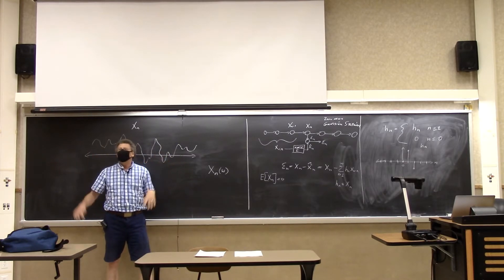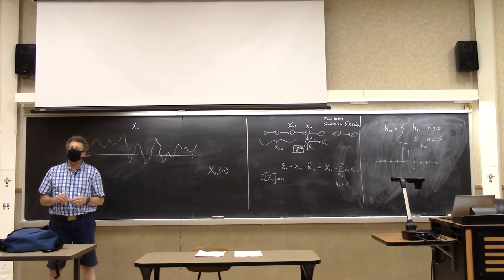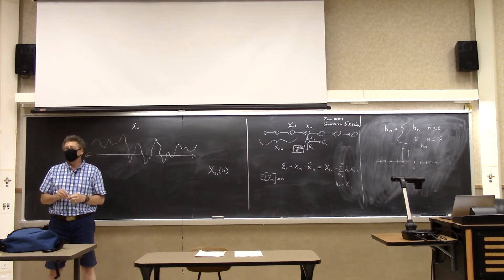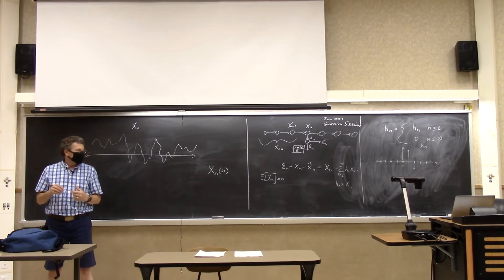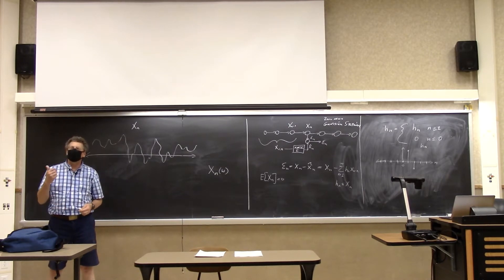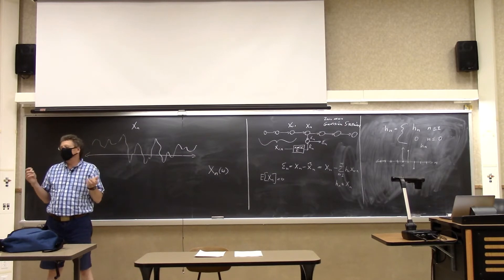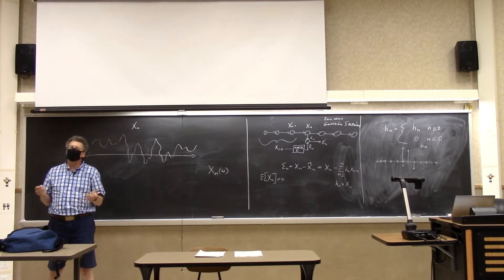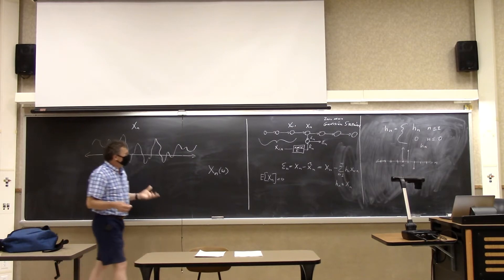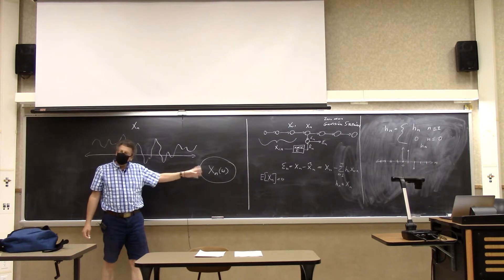So x_n is a set of random variables, each of which is really a function of ω. A random variable is a mathematical object — it's a function from Ω to the real line. A pizza is not a random variable; a coin flip is not a random variable because a coin flip is a physical event. A random variable is a purely mathematical concept that only exists mathematically.